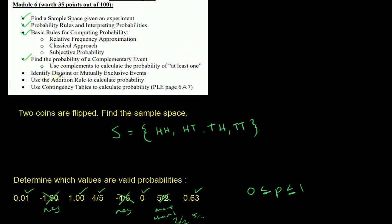Next, let's determine if events are disjoint or mutually exclusive — they mean the same thing — and apply the addition rule. Contingency tables will be saved for the next video. So let's finish this by talking about disjoint events and the addition rule.